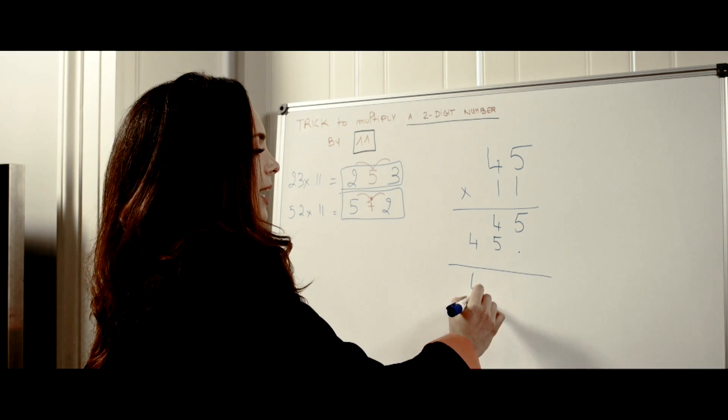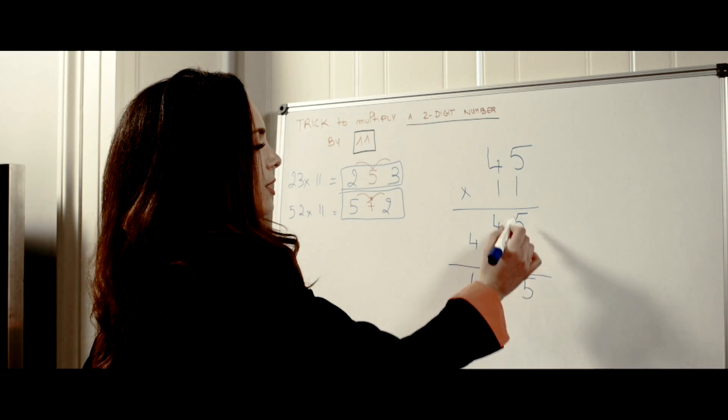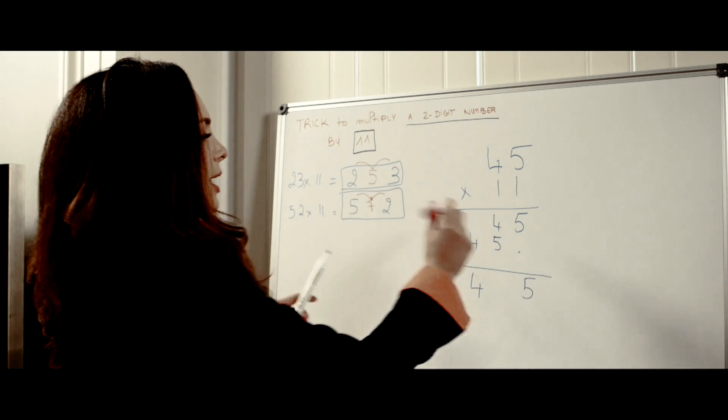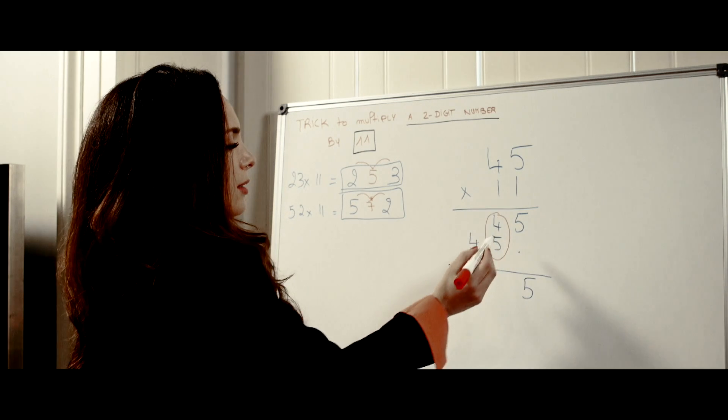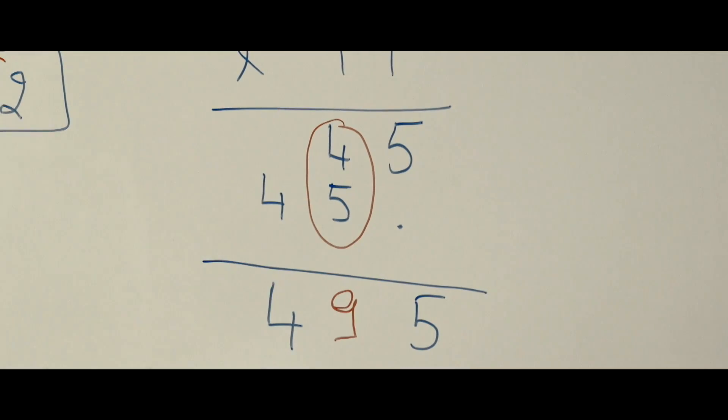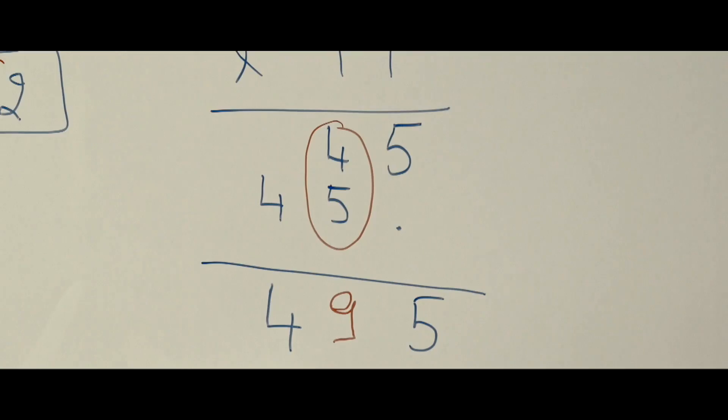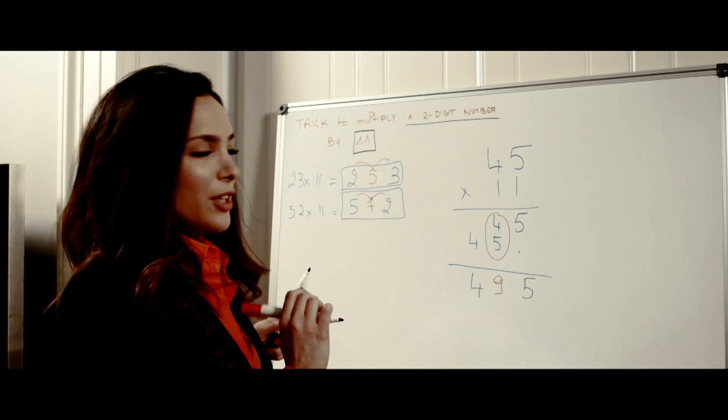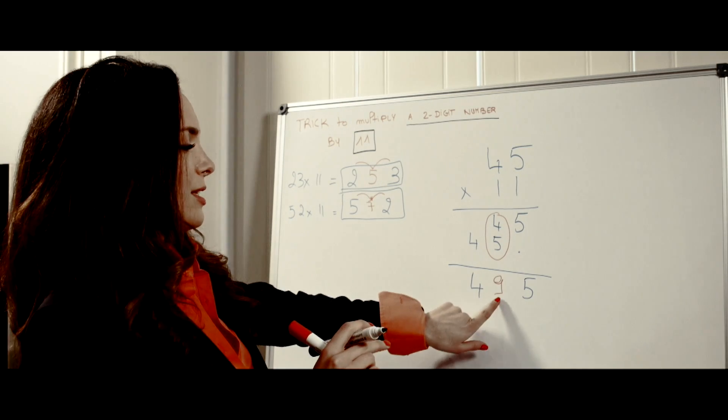And in reality that's exactly what we said. So really the 5 here will not change. There's the 4 and here it's really 5 plus 4 which is 9. So it's really the addition of the two. When does it become a little trickier is if this is bigger than 10.